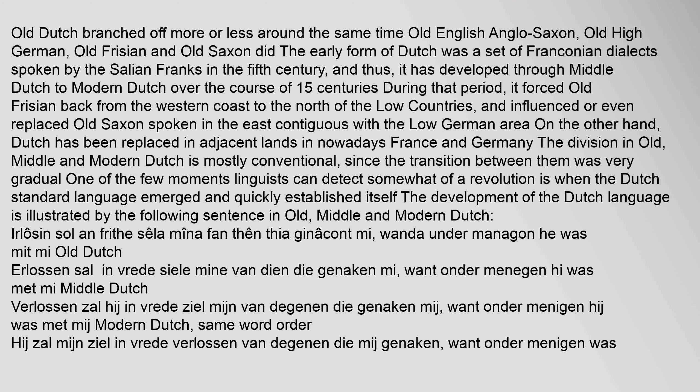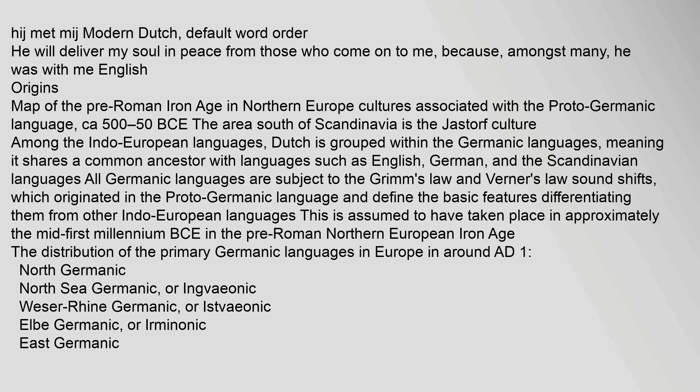The development of the Dutch language is illustrated by the same sentence across stages: Old Dutch: 'Erlosen sal and Fridhsella mina fan then Thea Ginikant mi, wanda under Managon he was mit mi.' Middle Dutch: 'Verlosen sal in vee reed seel mein van deen die geneken mi, want under Menagon hi was met mi.' Modern Dutch: 'Hij zal mijn zeel in vee reed verlosen van degenen die mij geneken, want onder Menagon was hij met mij.' English: 'He will deliver my soul in peace from those who come onto me, because, amongst many, he was with me.'